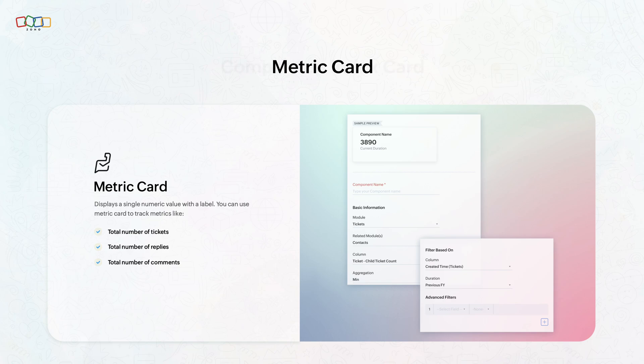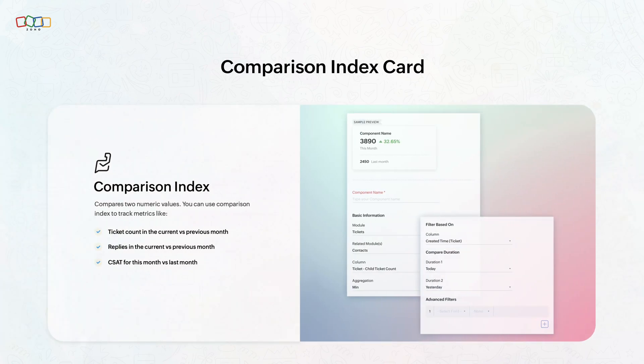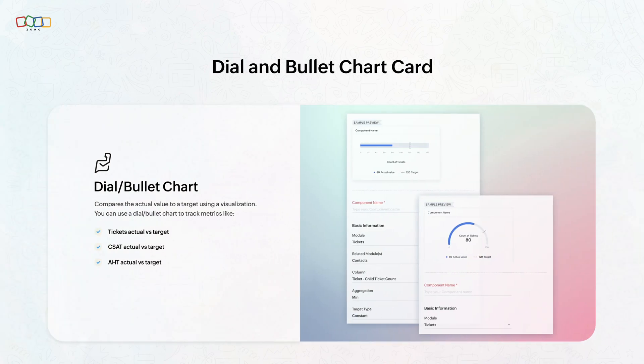Next is the comparison index, ideal for comparing KPIs across two different time periods. This feature helps you easily track performance changes over time. The dial chart and bullet chart are both used to compare actual values against targeted goals. The key difference between these two lies in their visual representation.